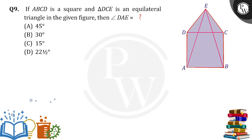If you observe the diagram, ABCD is a square. What do you mean by square? All the four sides are equal. So AB is equal to BC, which is equal to CD, which is equal to AD.